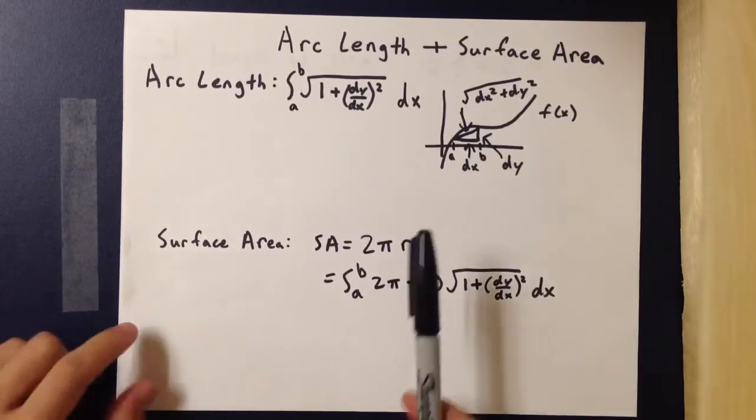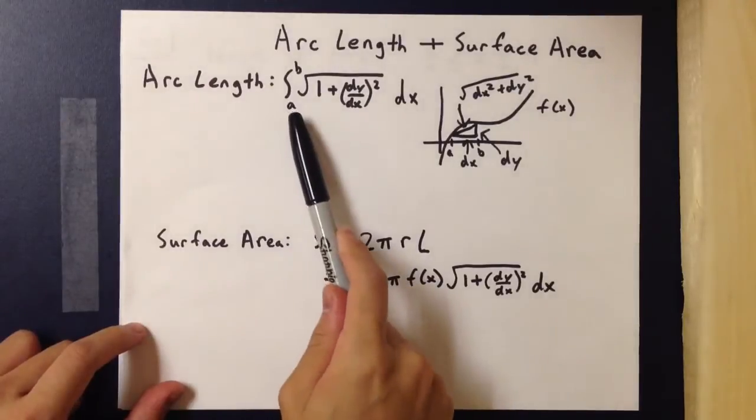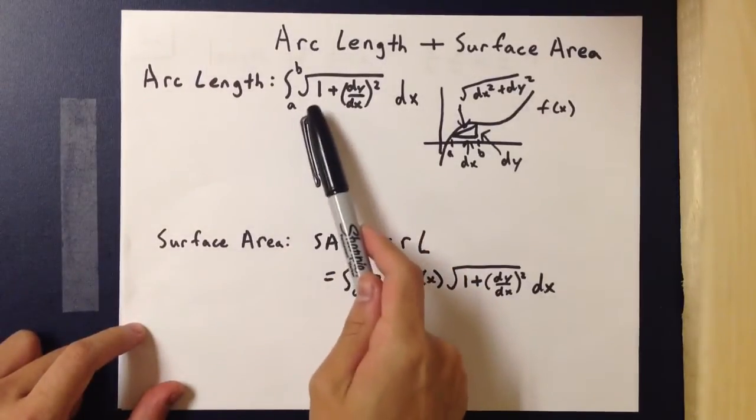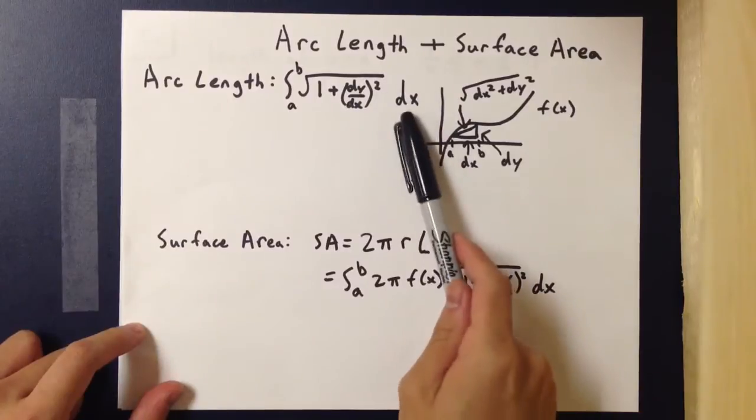So for arc length, the formula is defined as the integral from a to b of the square root of 1 plus (dy/dx)² dx.